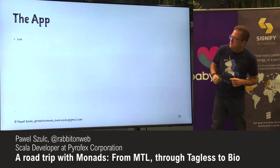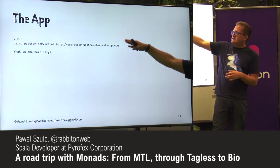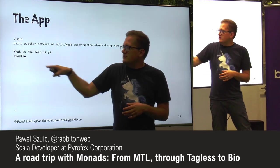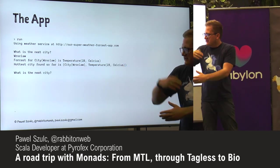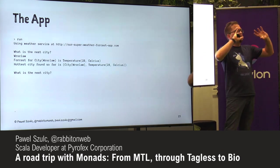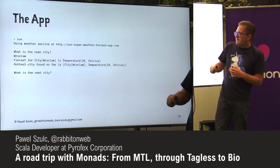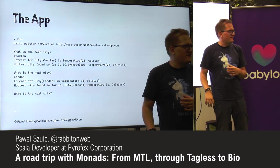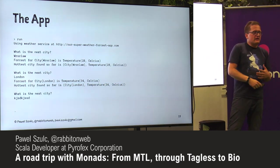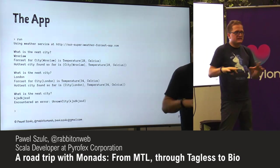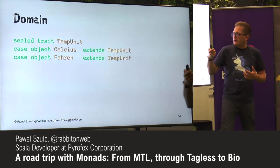The application we're going to write is a weather app. You run it, it tells you it's using some service out there, asks you for a city. I type my city, Wroclaw. It gives me a forecast and temperature. Each time I call it in a loop, it remembers which city was the hottest. So the hottest city found so far was mine at 28 degrees. Then I asked for London and it gives me 34 degrees — would never happen in reality, but let's assume it did. Now London is the hottest. If I provide something that's not a real city, the program exits telling me the city doesn't exist.